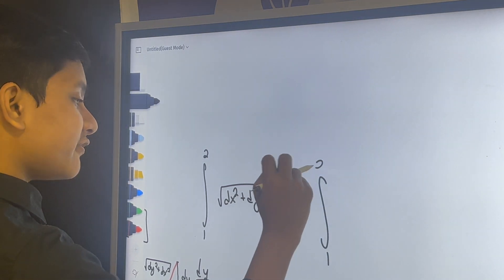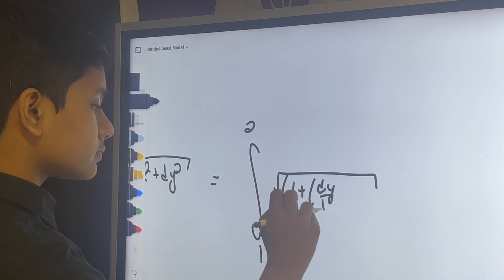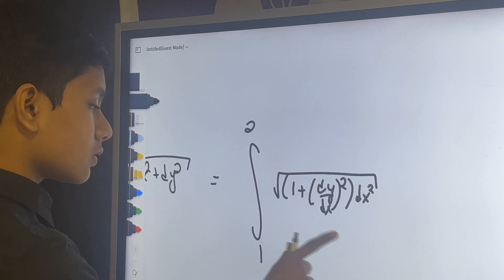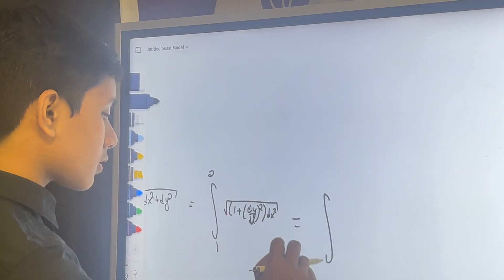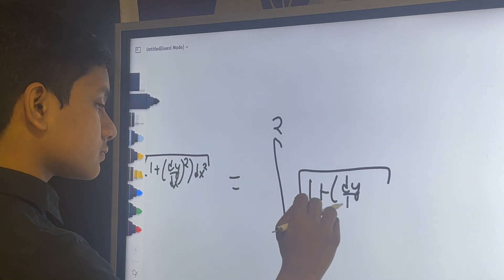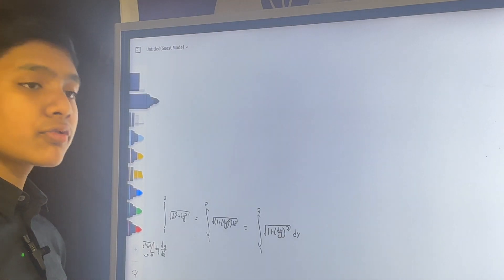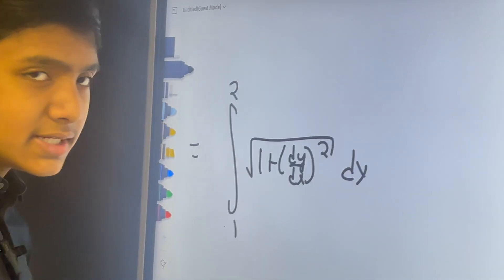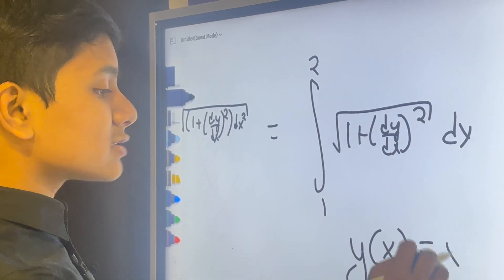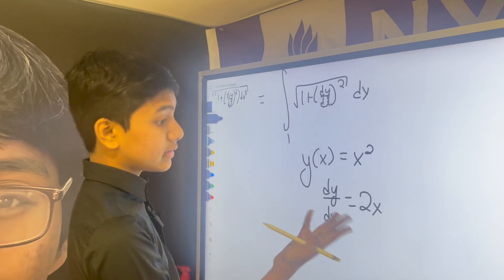But, you can simplify it by factoring out dx squared within this square root, which gives you... Alright, so now we're finally getting some. As you can see, for example, if you want to plug in y of x is equal to x squared, you just take the derivative with respect to x and you plug in.